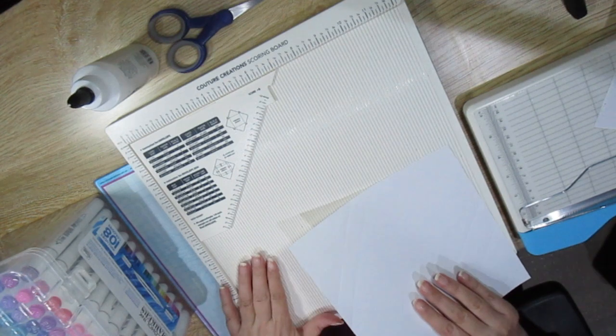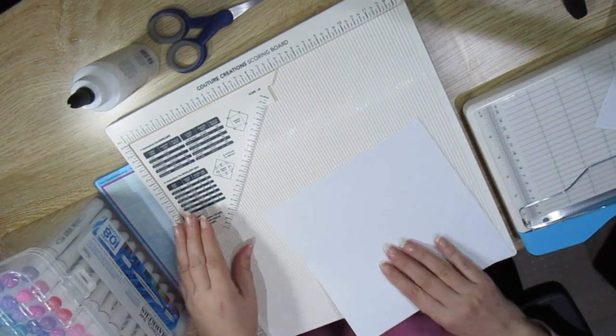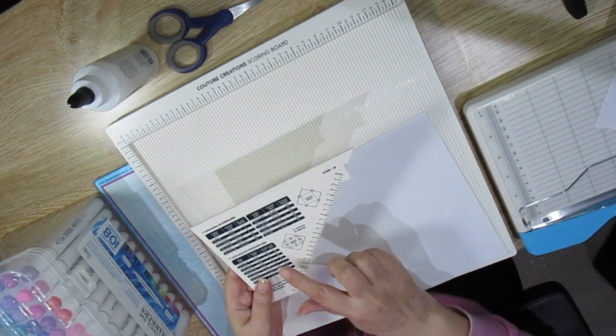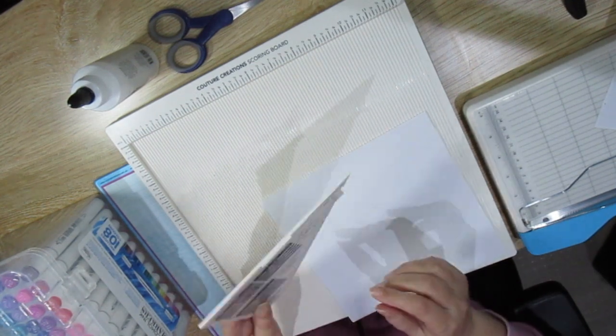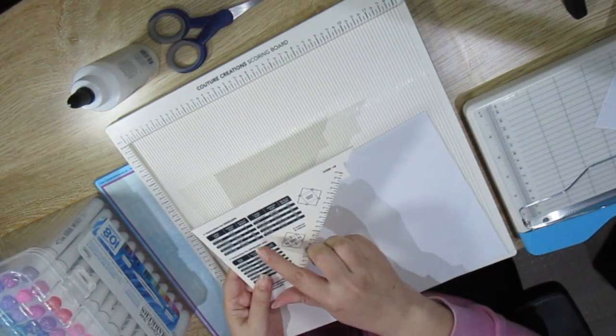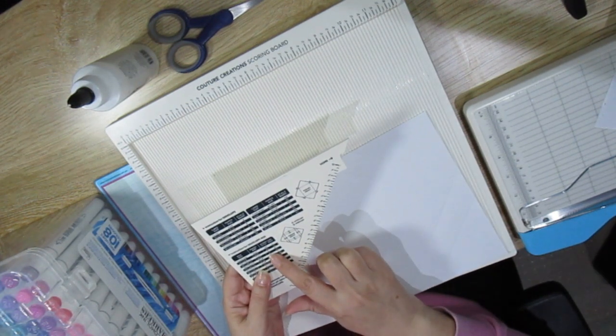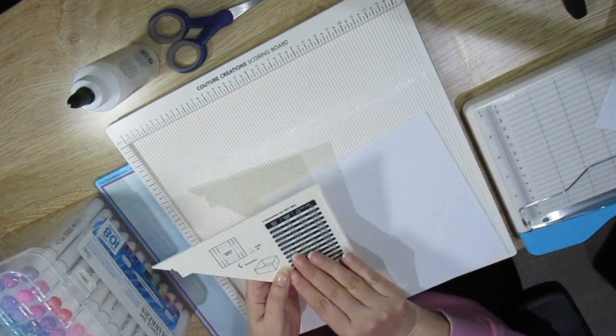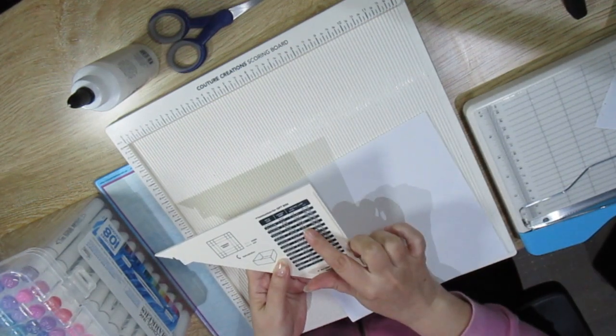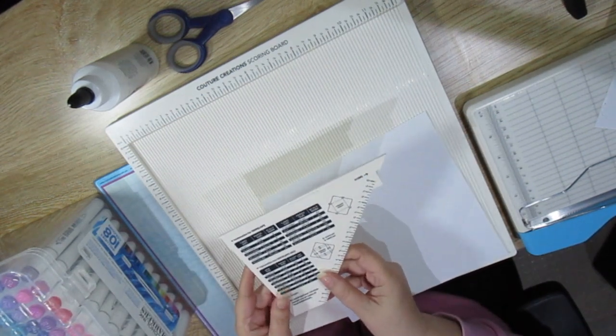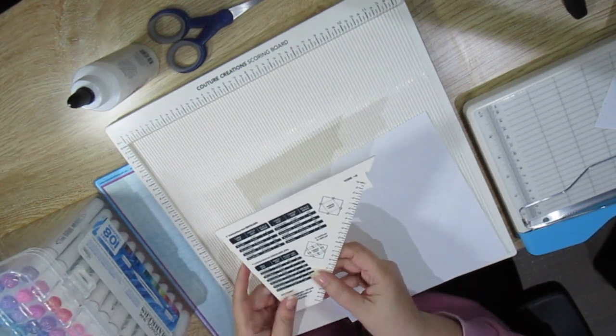I'm going to use the Kachur Creations Scoring Board and with the Kachur Creations Scoring Board you get this measurement plate where you can get the envelope measurements, the envelope box measurements. If you turn it you will get the gift box measurements. This is such a handy tool that's coming with the Kachur Creations Scoring Board.